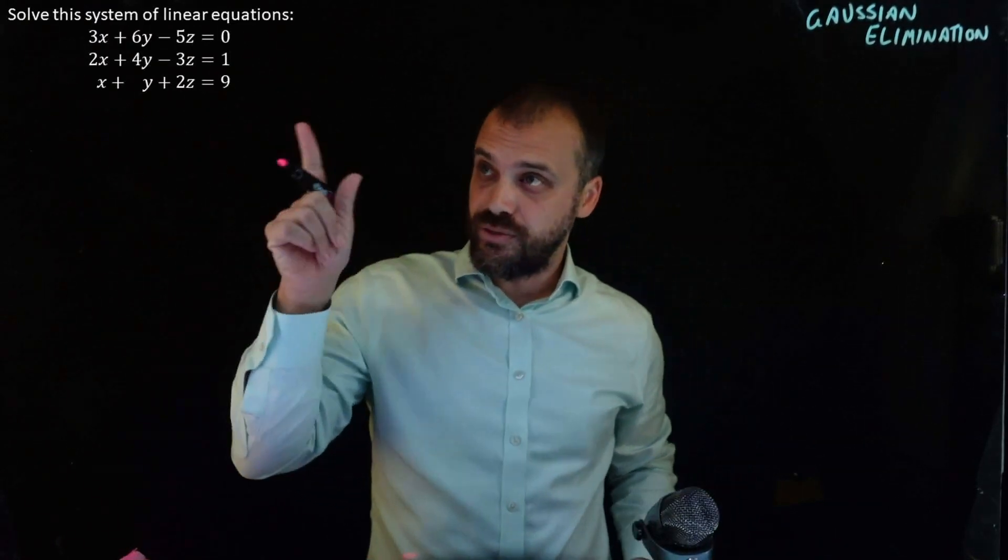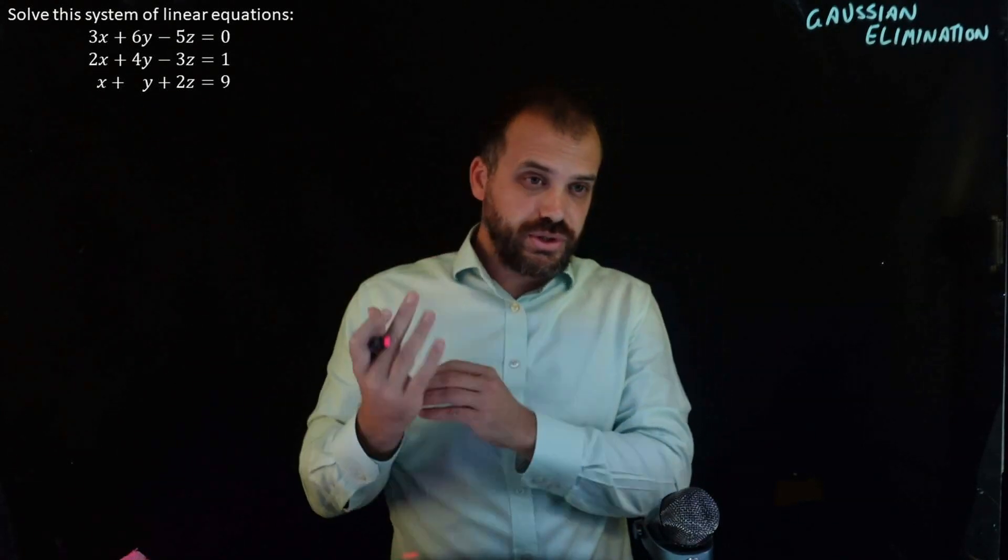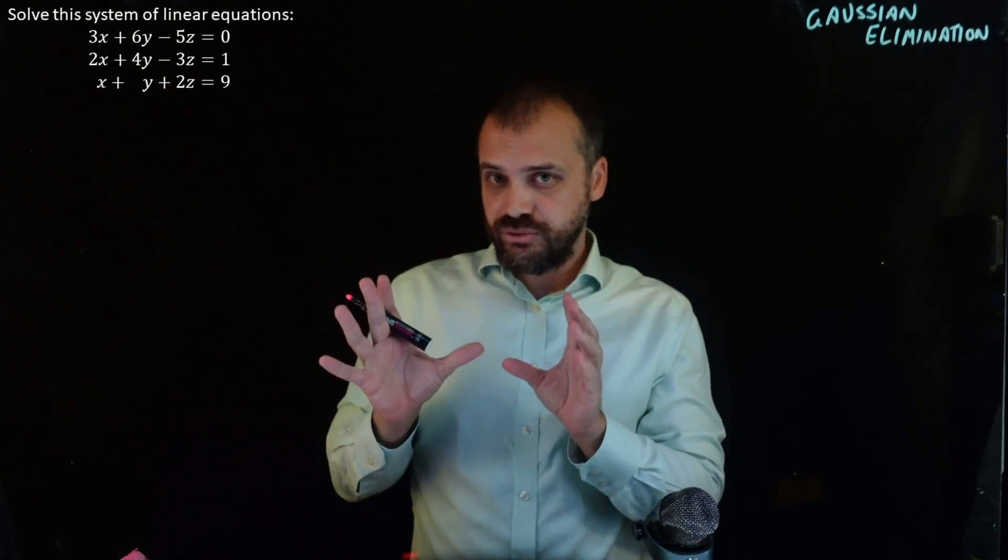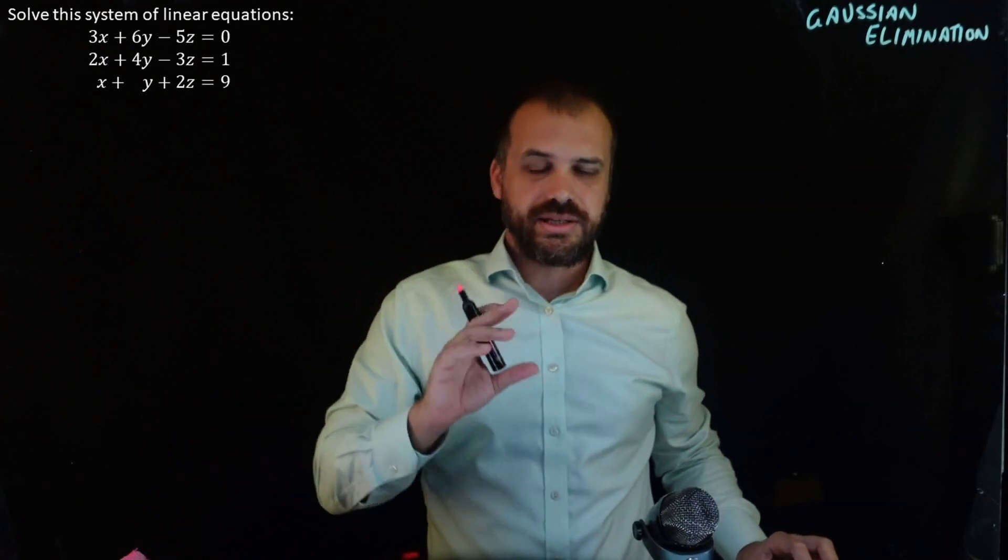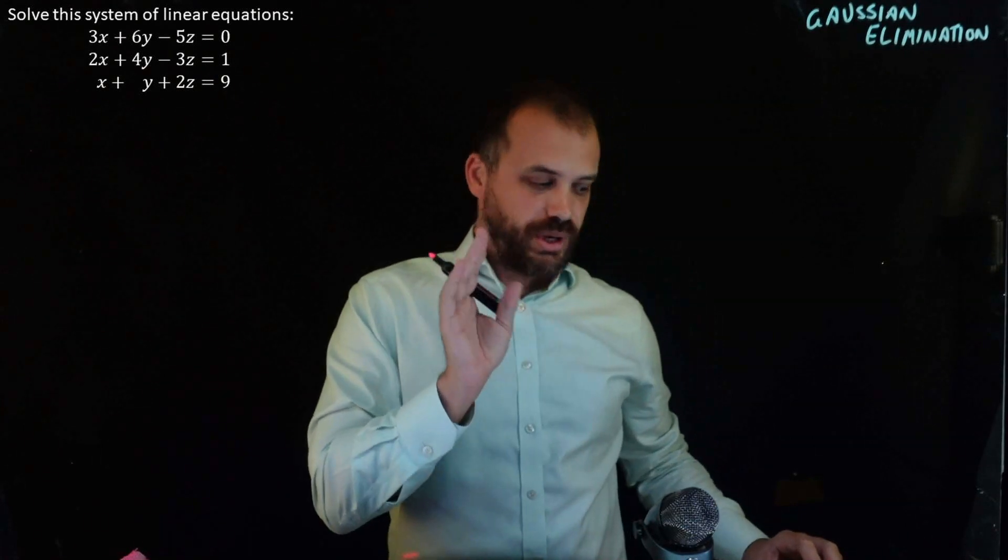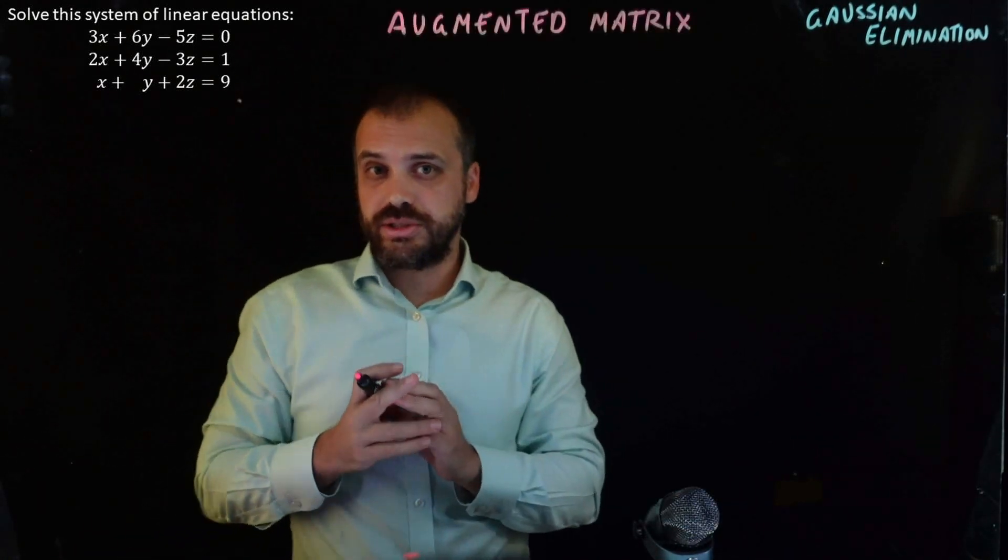So that's where Gaussian elimination comes into the picture. So a question like this, and we're going to put this into a matrix. Now everything that we're doing, we could actually do it without a matrix, but we do it all in a matrix because it just makes it nice and neat and easy. We put it into a special kind of matrix, and that special kind of matrix is called an augmented matrix.